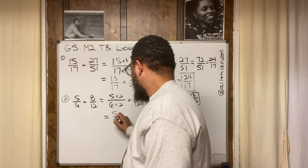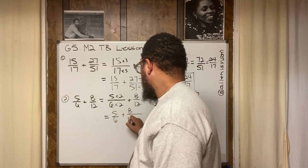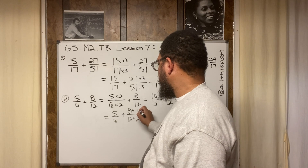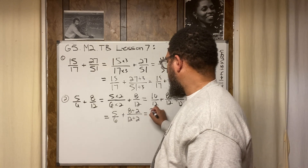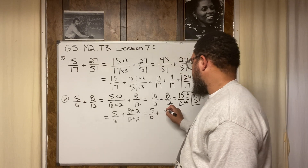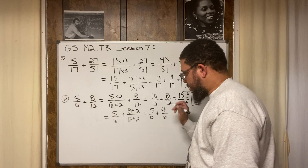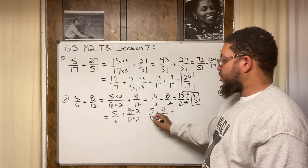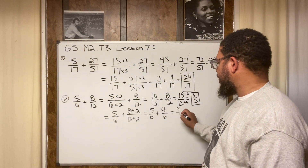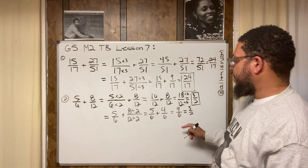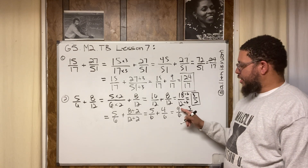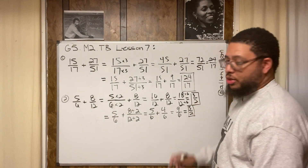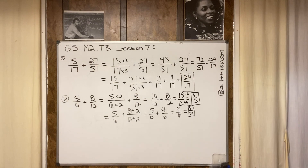So we have 5/6 plus 8/12, and we divide the 8/12 by 2 on both top and bottom: 8 divided by 2 is 4, 12 divided by 2 is 6. That gives us 5/6 plus 4/6. How many sixths altogether? 9 sixths, which is also 3/2, because 9 divided by 3 is 3 and 6 divided by 3 is 2. Either way we get 3/2.